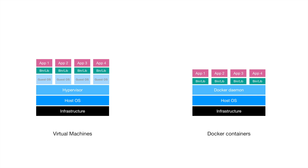The OS capabilities required by those containers are provided by the Docker daemon using the host operating system. This is how virtual machines differ from Docker containers. Compared to virtual machines, Docker containers are lightweight, very easily spun up, and take milliseconds to boot up and start working, rather than virtual machines which take significant time to boot up, reconfigure, and become usable.